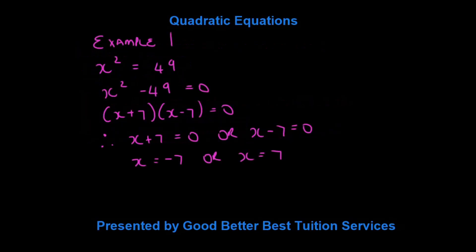So, let's look at our first example. We have x squared is equal to 49. Now, remember I said we want everything on the left-hand side, so we take it over, the sign changes, and we have x squared minus 49 is equal to 0, which we need to factorize. It's the difference of two squares.